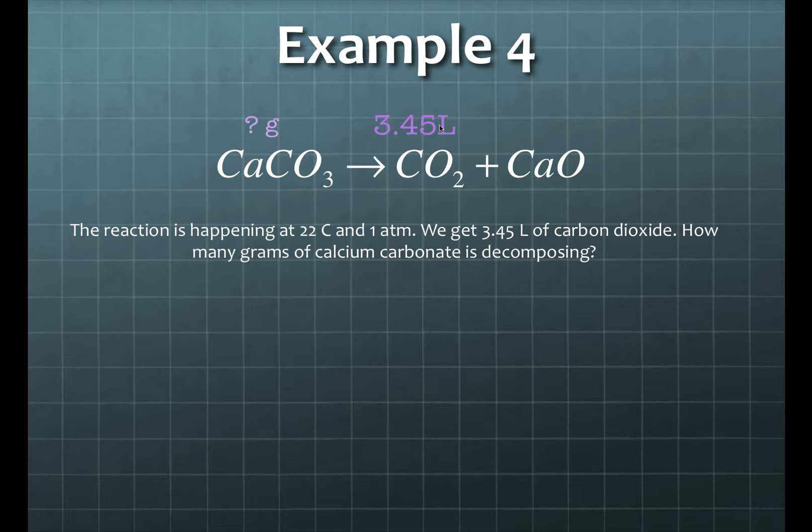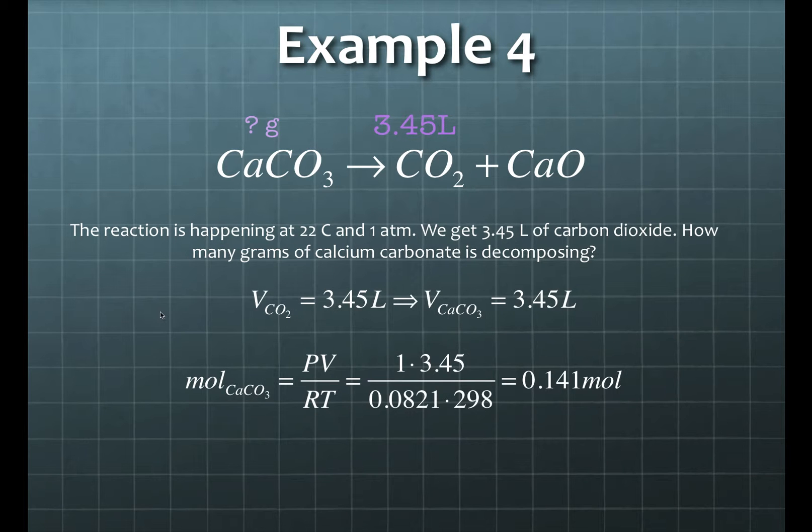So in order to figure out the number of moles, I'll just use PV equals nRT. I need to find n, which is the number of moles, so I'll take PV and divide it by RT. P is 1 atmosphere as given. The number of liters is 3.45, 1 to 1. R is the usual 0.0821, and since it's 22 degrees Celsius, you add 273 to it, you end up with 298. So the number of moles of calcium carbonate is 0.141 moles.